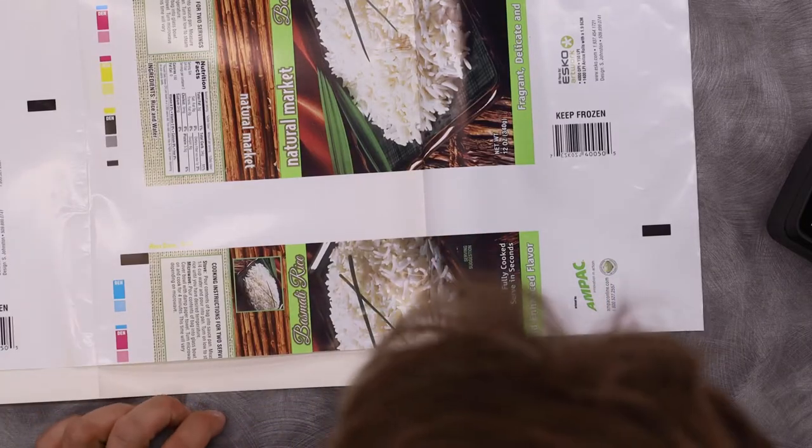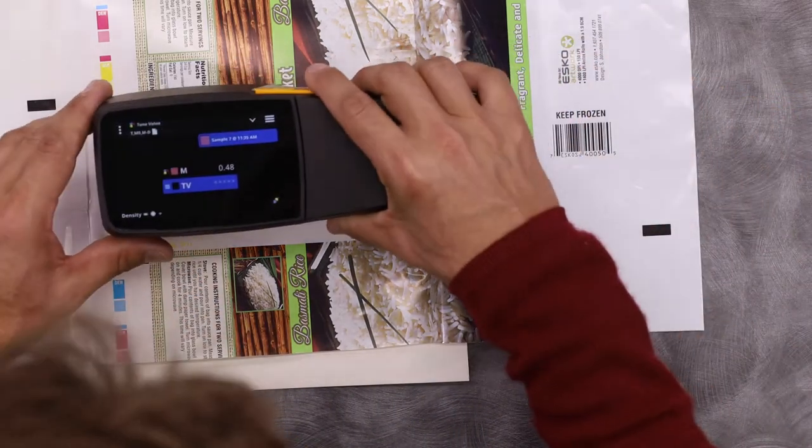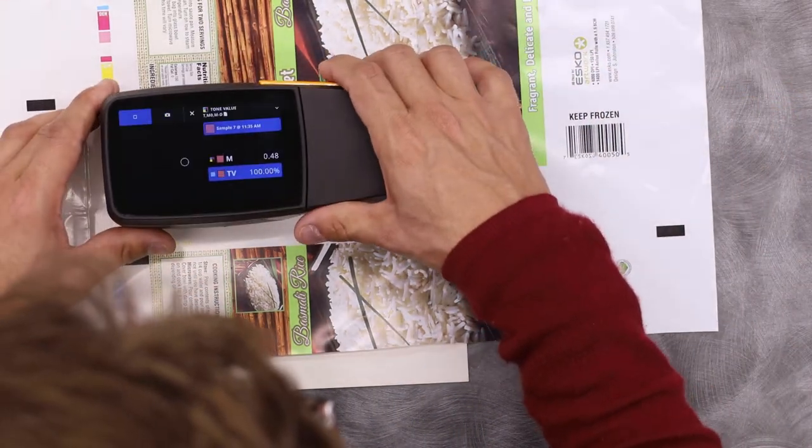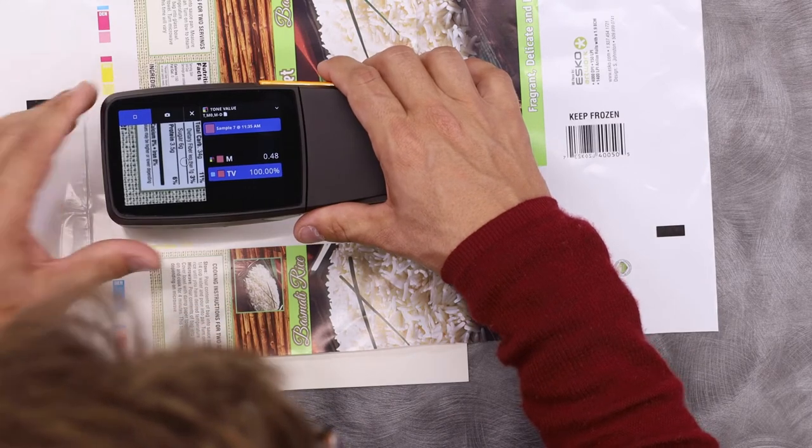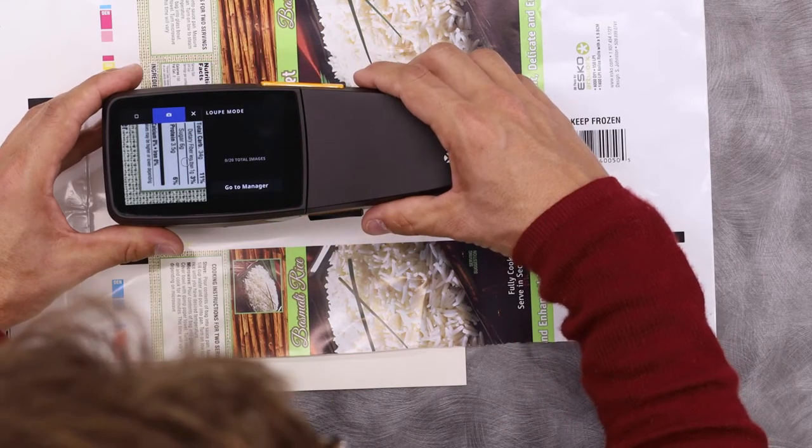So here I have a Flexo sample, and digital loop is a camera image that I can zoom in on. If I place my device on an area that I want to capture, typically I'm in a spot measurement mode, but if I hit this camera icon, I can switch to digital loop.